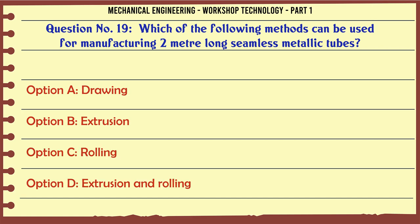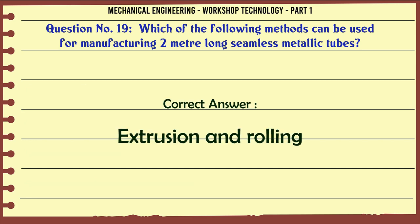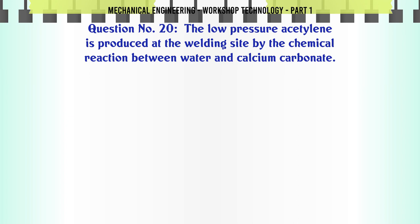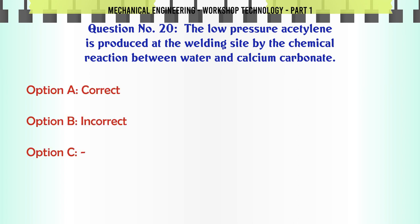Which of the following methods can be used for manufacturing two-meter long seamless metallic tubes? A. Drawing. B. Extrusion. C. Rolling. D. Extrusion and rolling. The correct answer is: Extrusion and rolling.